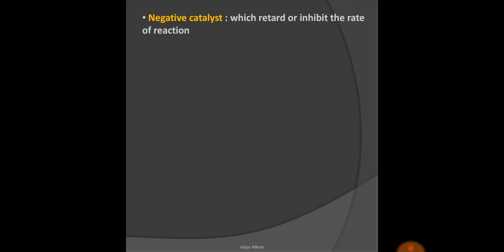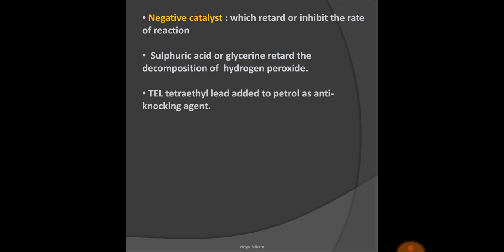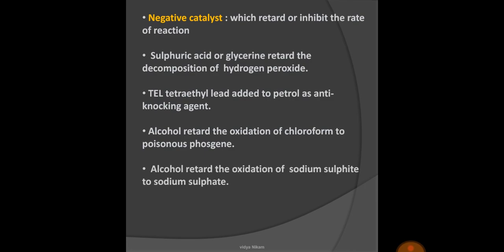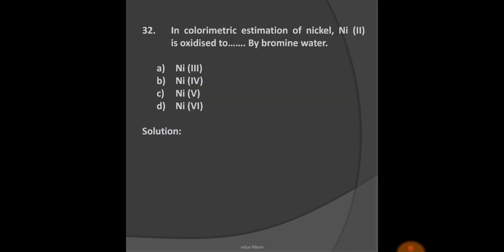Next is negative catalyst. It is the one which retards or inhibits the rate of reaction. For example, sulfuric acid or glycerin retards the decomposition of hydrogen peroxide. Tetraethyl lead added to petrol as anti-knocking agent, alcohol retards the oxidation of chloroform to poisonous phosgene. Alcohol also retards the oxidation of sodium sulfite to sodium sulfate. Therefore, decomposition of hydrogen peroxide is retarded by sulfuric acid, so sulfuric acid acts as a negative catalyst. Option D is the right option.